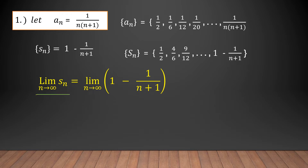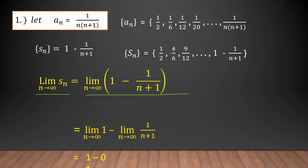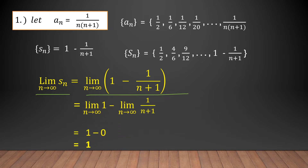Based on the definition, if we get the limit of the series as n approaches positive infinity, that will be equal to the limit of 1 minus 1 over (n plus 1) as n approaches infinity. We can separate the quantities: the limit of 1 as n approaches infinity, minus the limit of 1 over (n plus 1) as n approaches infinity. The limit of 1 is 1 because it is a constant, and the limit of 1 over (n plus 1) is 0.